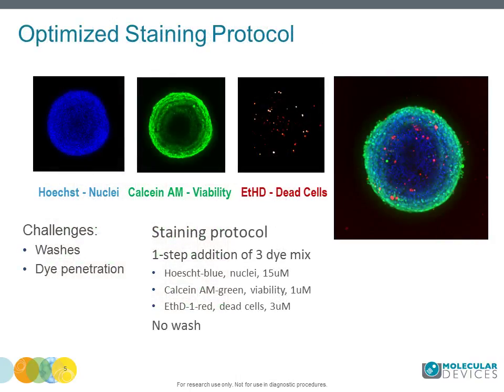3D assays present a number of other challenges, some related to efficiency of dye penetration and washes. A one-step dye mixture addition was used to eliminate the need for fixing cells or repeated washes. Calcein-AM was used to measure metabolically active cells, viability, and a variety of morphological parameters. Hoechst was used to measure total cell count and nuclear shape. Ethidium homodimer was used to measure dead cells. Suggested concentrations are shown on the slide.